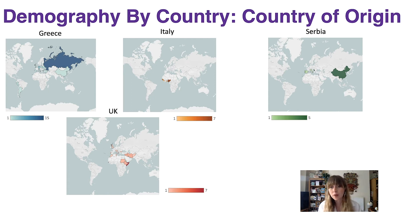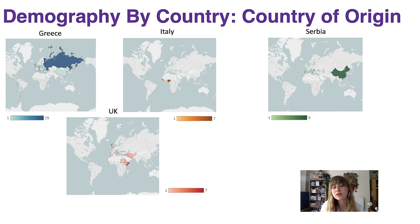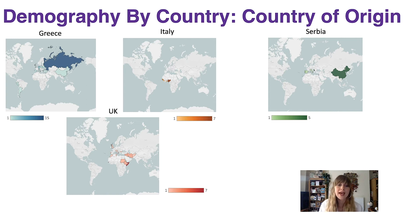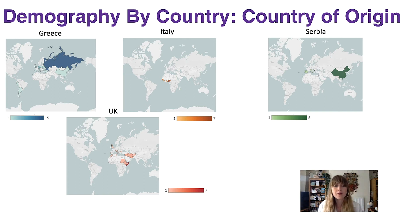In Serbia, we have not so much of a spread, with the majority of students being from China and Serbia, with five students from each. And then finally, in the UK, we have students from Africa, Europe and Asia, with the majority of students originating from Somalia.